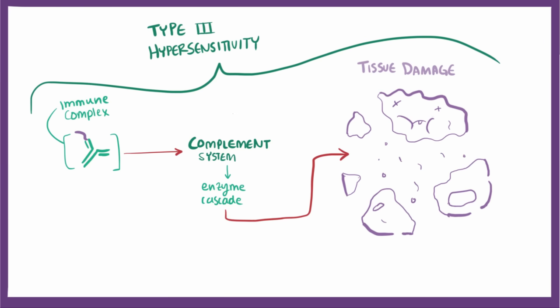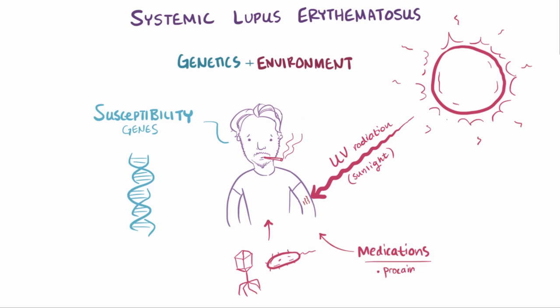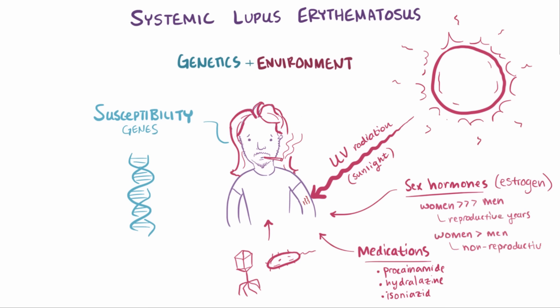UV radiation isn't the only trigger associated with lupus. Other potential triggers include cigarette smoking, viruses, bacteria, certain medications like procainamide, hydralazine, and isoniazid, as well as sex hormones — particularly estrogen. This may partly explain why lupus is about 10 times more common in women than men during reproductive years, but only about 2 to 3 times more common in childhood or past age 65.